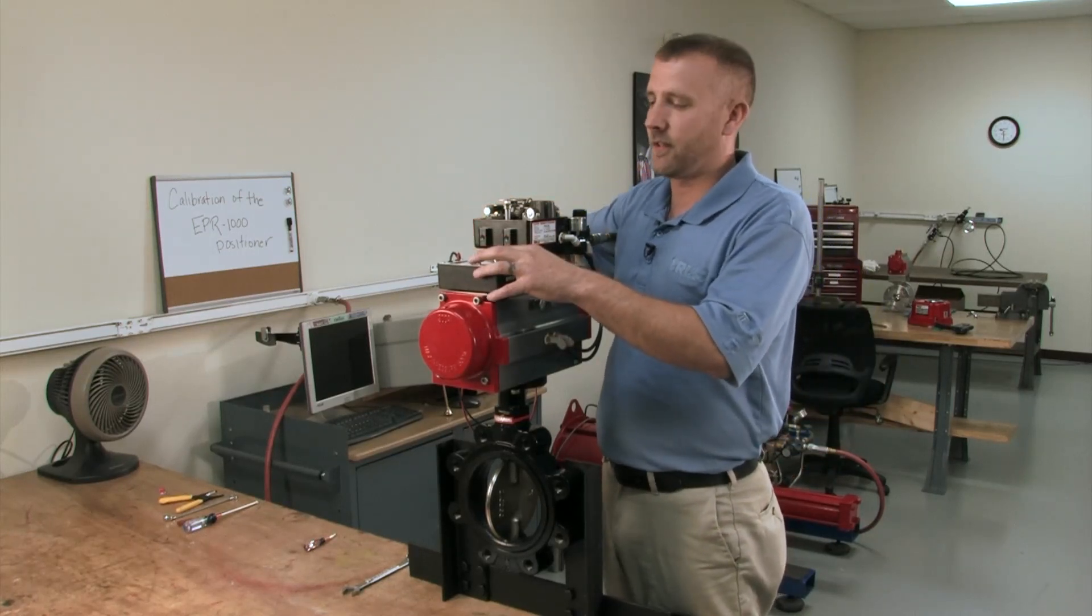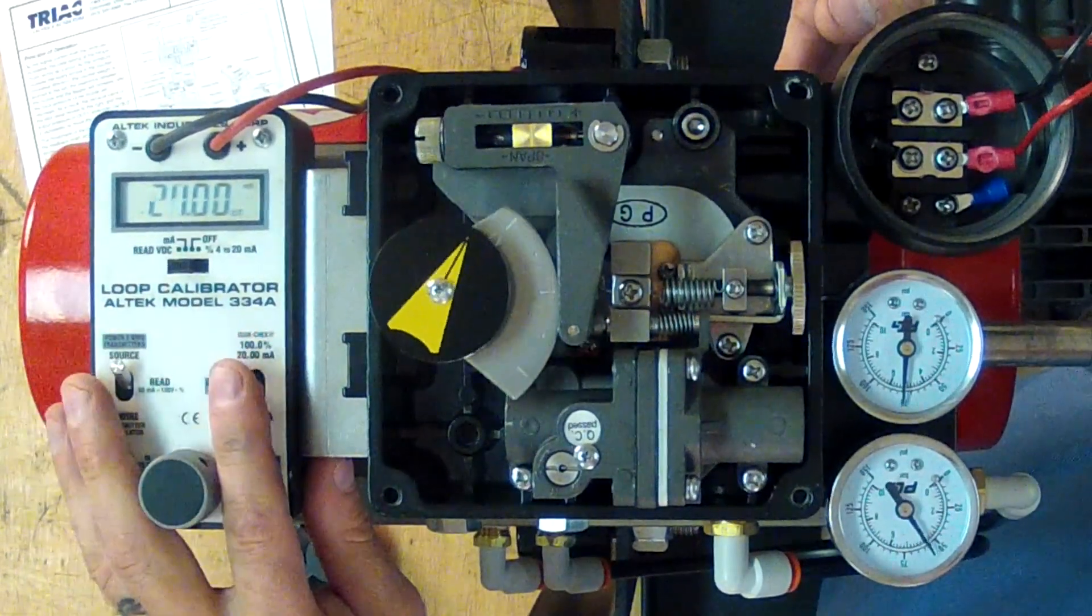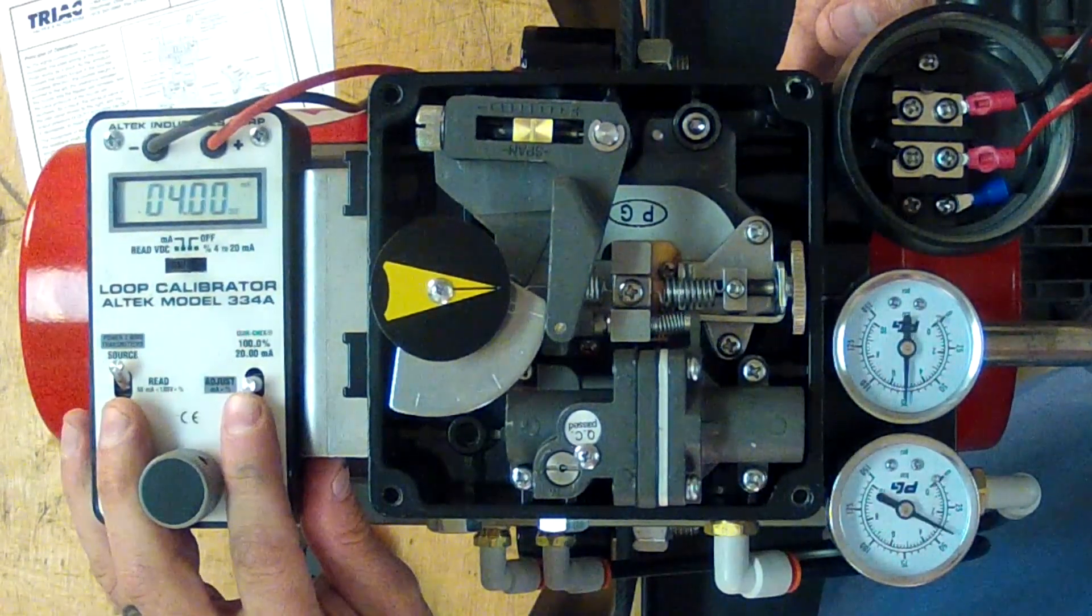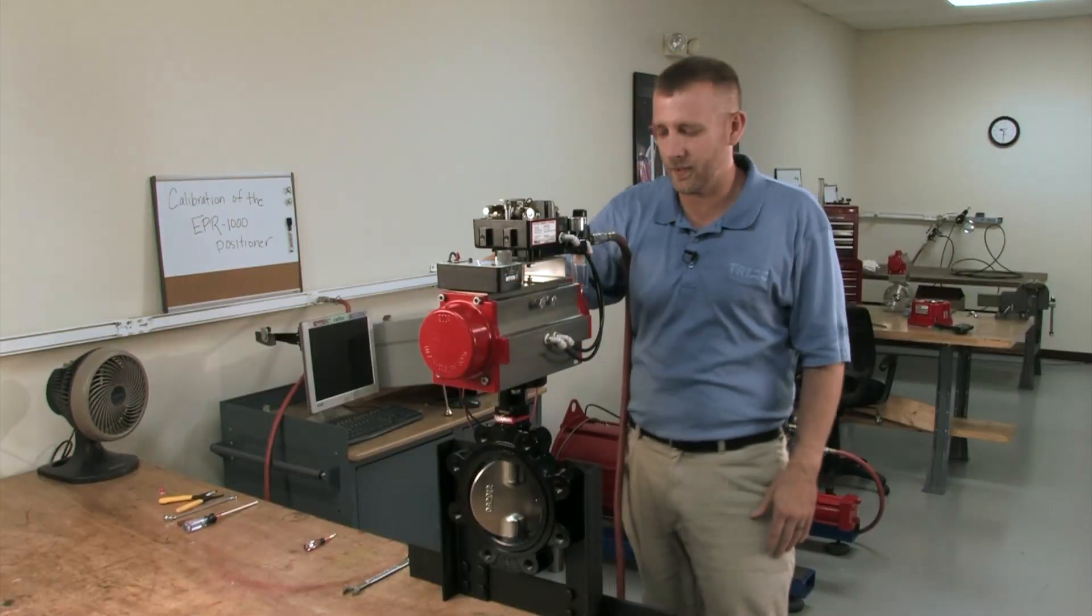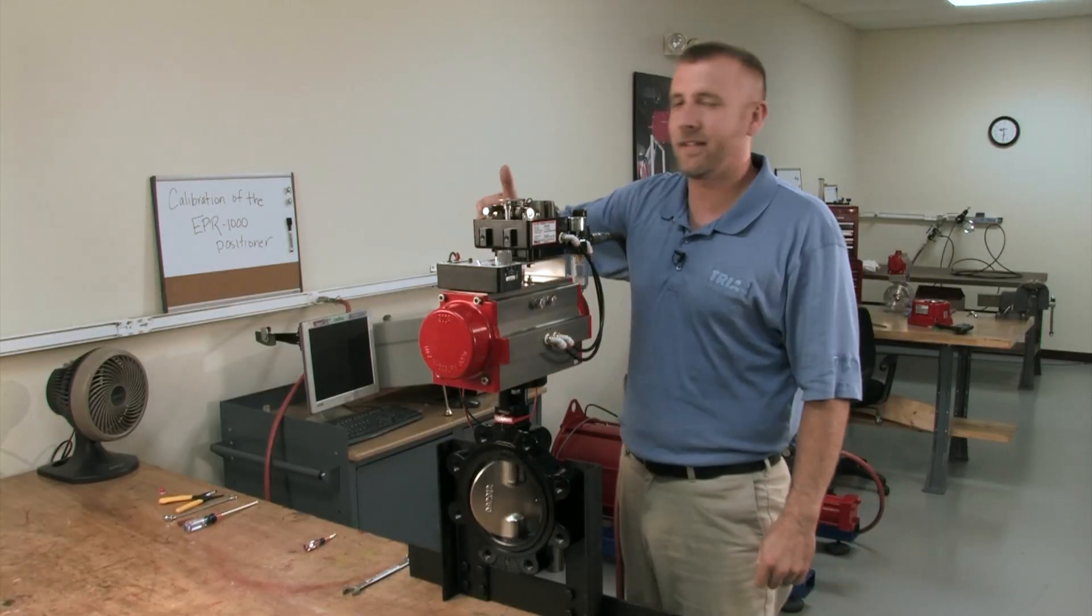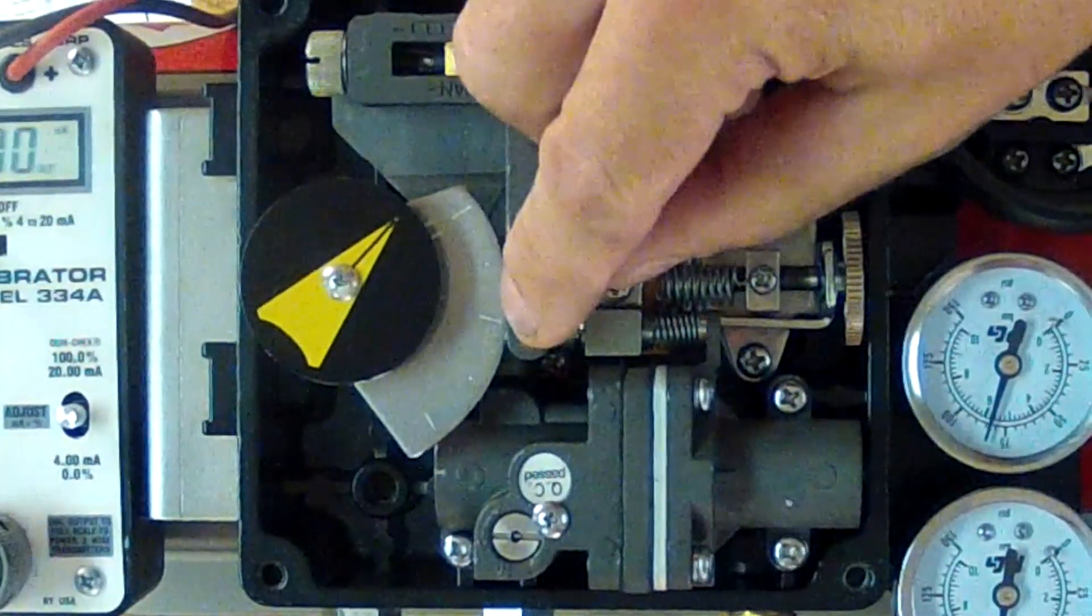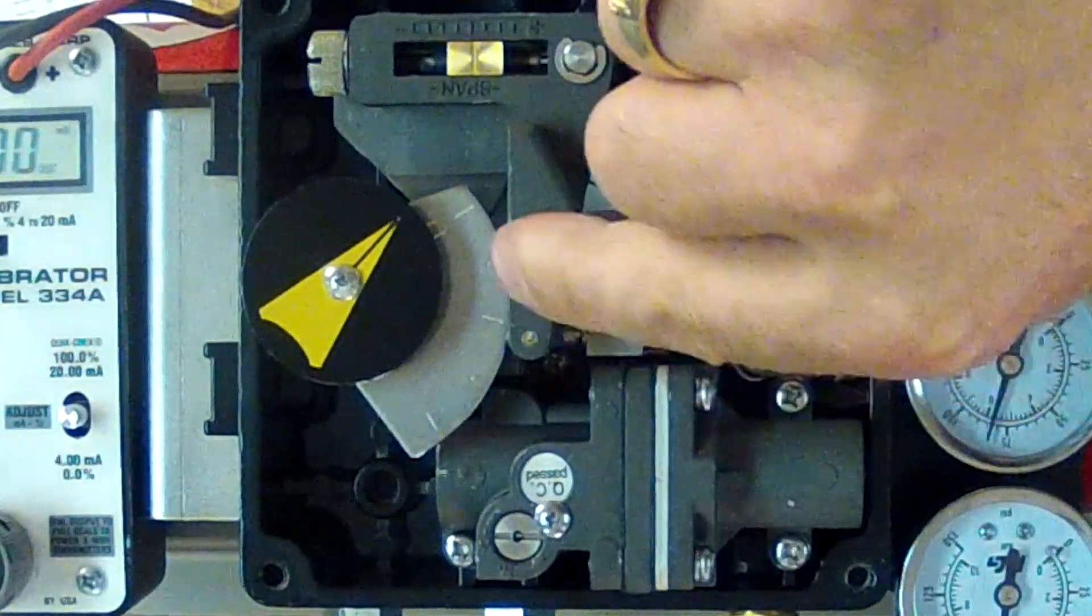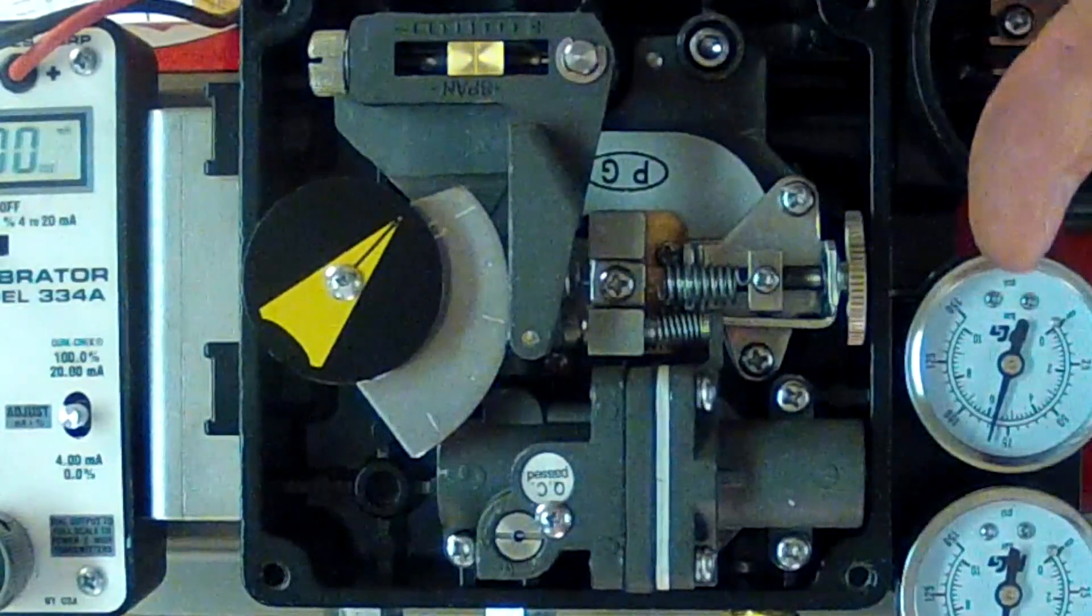Now, we're going to check our mid position by going back down to 4 milliamps, then to 12. Now, what you're looking for in your mid position is a nice 45 degree angle on our disc. Or if the package is in line and you cannot see your disc or your ball in your valve, a reference point on our travel cam is the mid line here. Should be somewhere in line with the bearing. It doesn't have to be perfect, but that's just a reference point.